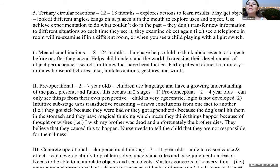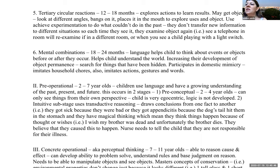Mental combinations: eighteen to twenty-four months — language helps children think about events or objects before or after they occur and increases development of object permanence. They will now search for things that have been hidden. They participate in domestic mimicry — imitating household chores, actions, gestures, and words. Parents need to be very cautious about what they say and do because children will copy them.